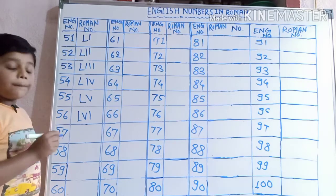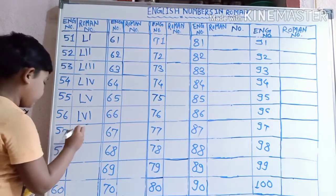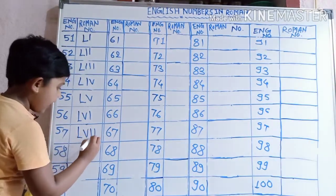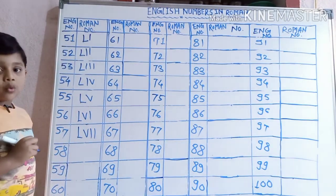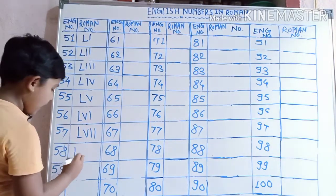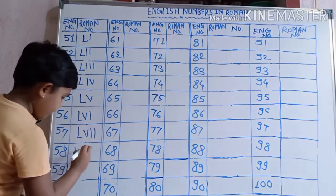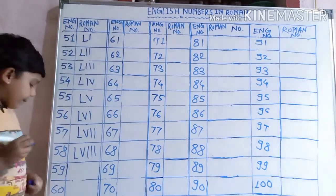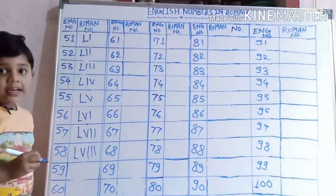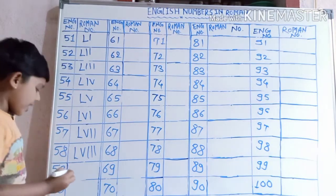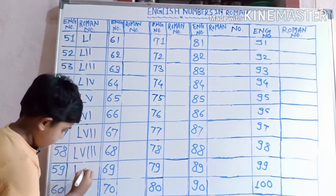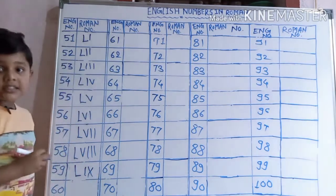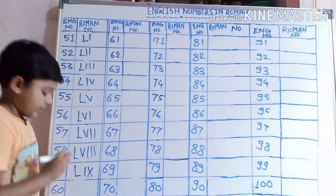57 ko: L, V, I, I. 58 ko: L, V, I, I, I. 59 ko: L, I, I. 60 ko: L, V, I, I.